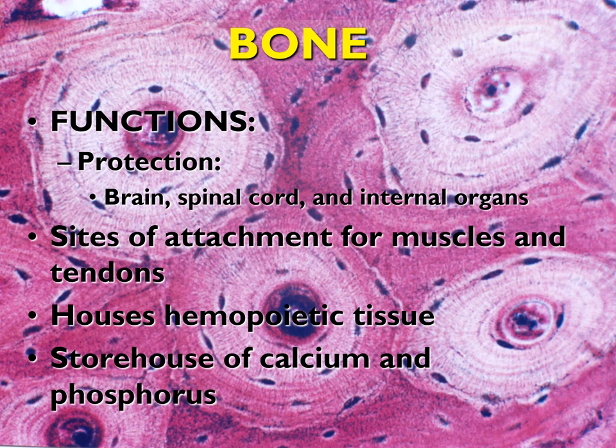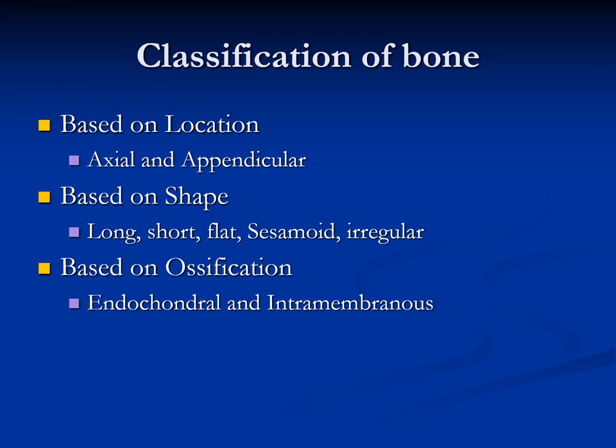Now I'm going to talk about the classification of bone. There are three criteria for classification: the first depends on the location of the bone, the second is based on the shape, and the last is based on ossification — how the bone is formed. Based on location we have the axial skeleton and the appendicular skeleton. Based on shape we have long, short, flat, sesamoid, and irregular. Based on ossification we have endochondral ossification and intramembranous ossification.